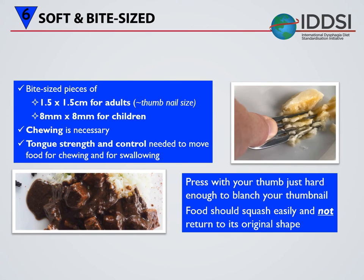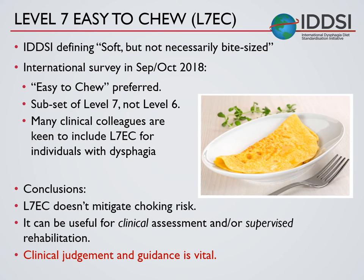The particle size limitation in level 6 relates to the size of the adult tracheal opening and is intended that, in the worst case scenario, particles of food would pass through the airways rather than blocking them completely. This size of 15 millimetres can be measured practically as it's the same size as the width of a standard table fork. There is now a subcategory of level 7 regular foods describing easy-to-chew foods — level 7 easy to chew. This uses the same definition of soft as level 6 but without the particle size limitation. Foods in this category would need to be broken up into bite-sized pieces using the side of a fork or a knife, and because this level doesn't have that inherent mitigation of a choking risk, it needs to be used under clinical guidance.